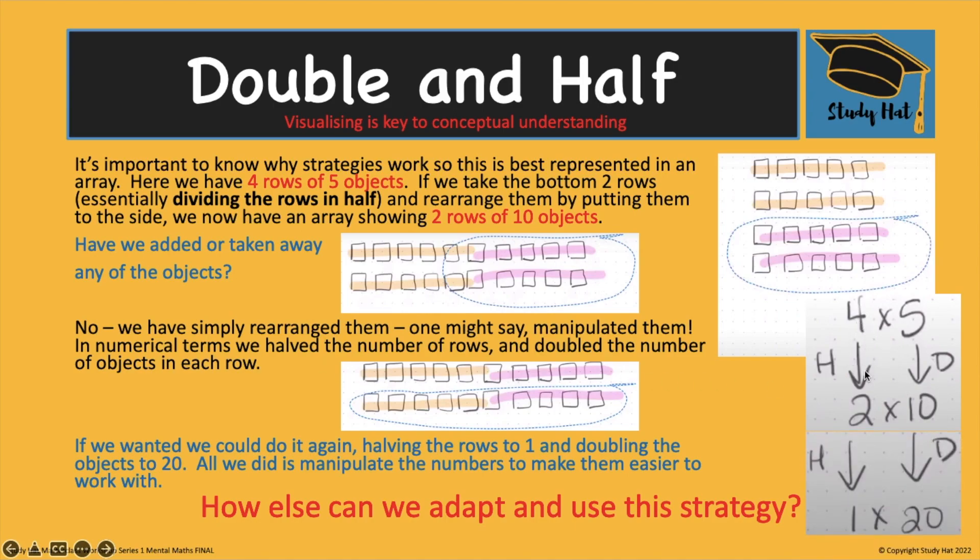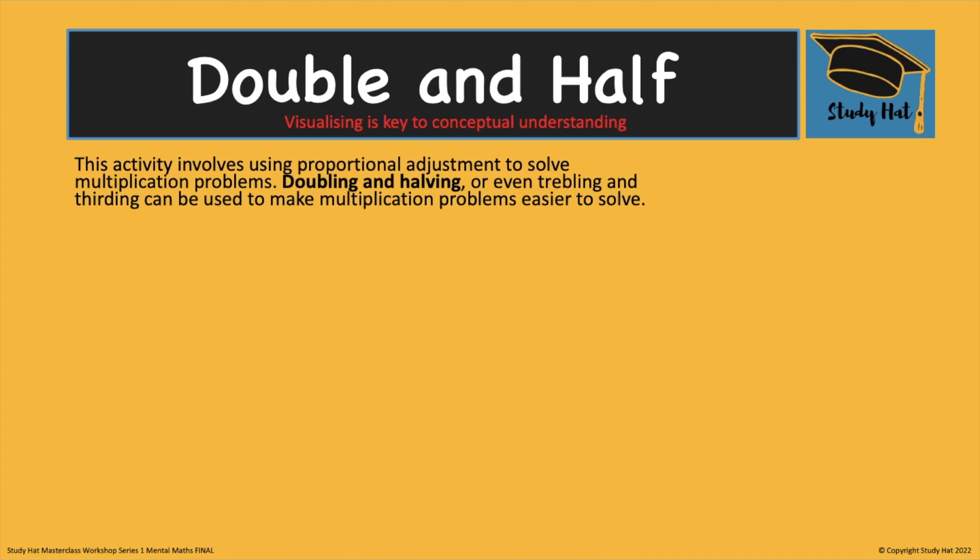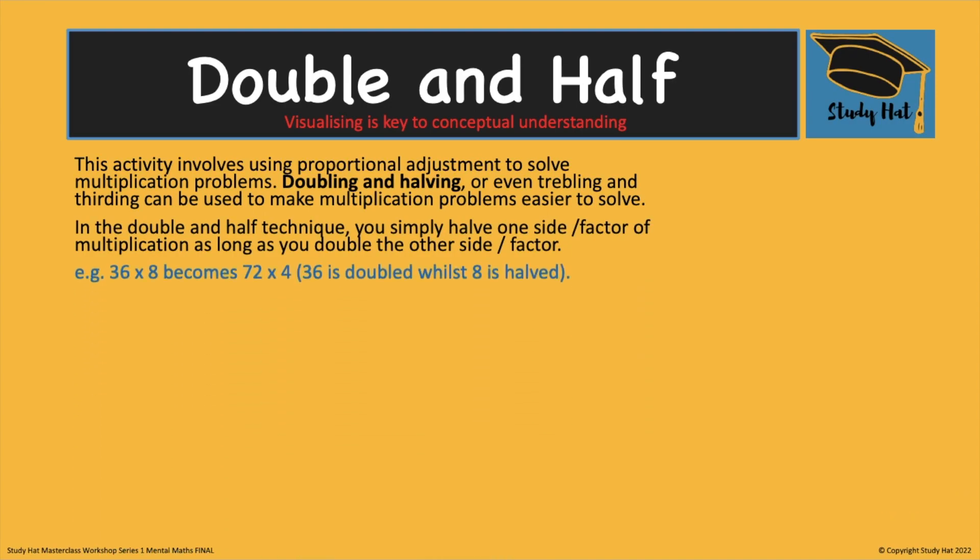Mathematically that's simply 2 halved is 1, 10 doubled is 20 and now I'm left with an equation that needs to go no further. The answer is 20. 20 objects. There were 20 objects in each of these examples. That's what you need to remember. Nothing has been added. Nothing has been taken away. So to understand that the key knowledge there is that it's a proportional adjustment. It's proportional. Everything you have done is to make things easier.